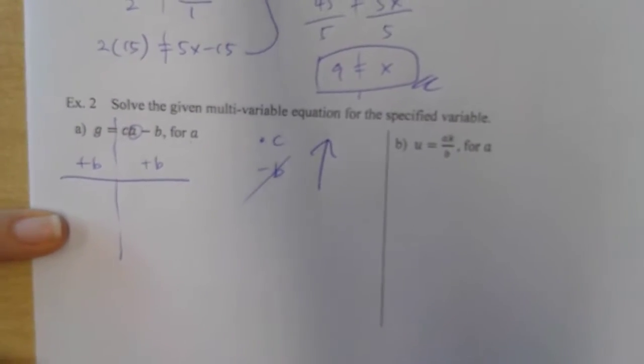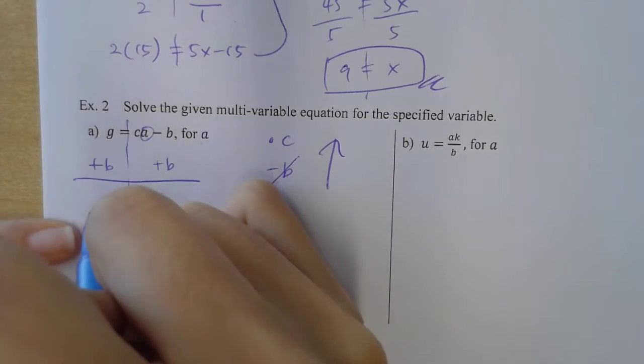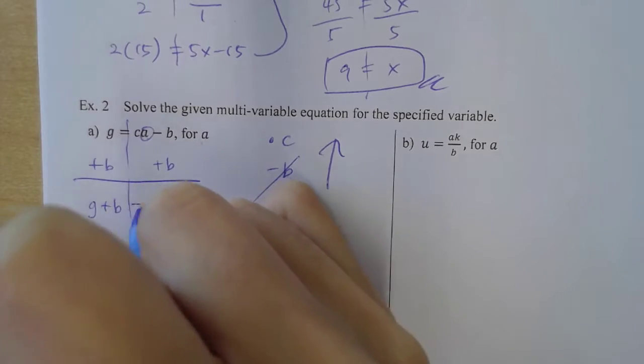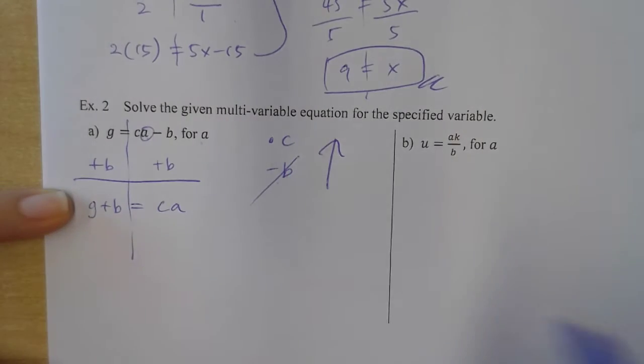What the heck? Okay. So then, G plus B. Yo, they're not like terms. So just write it out. And I got C, A. How do I undo multiplication by C?